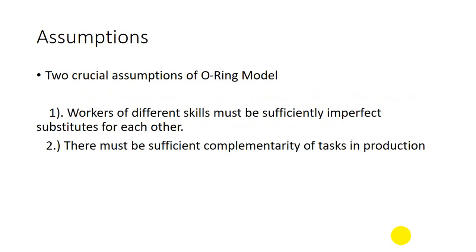Now we are going to discuss the assumptions regarding the O-ring model. There are two basic assumptions. The first assumption: workers of different skills must be sufficiently imperfect substitutes for each other. If not — for example, if one high-quality worker can be replaced by two low-quality workers — there is no prediction of matching, and any mix of workers could be possible in the equilibrium.